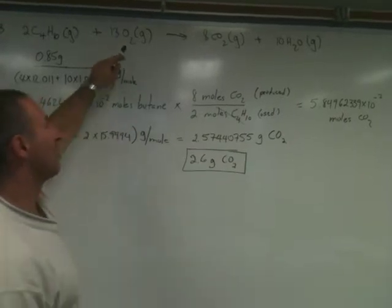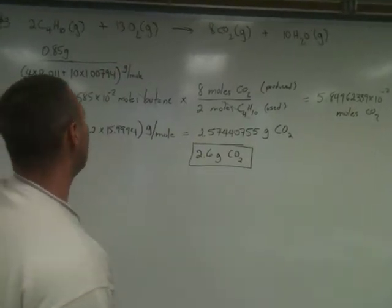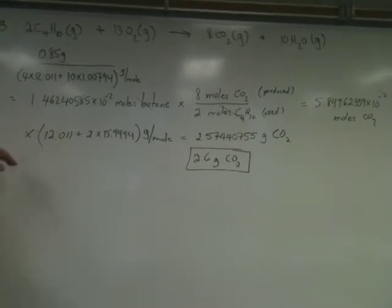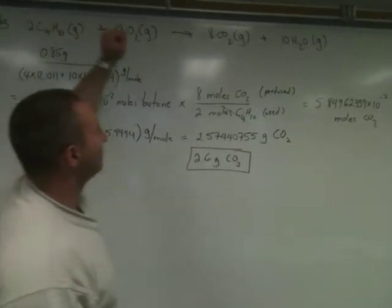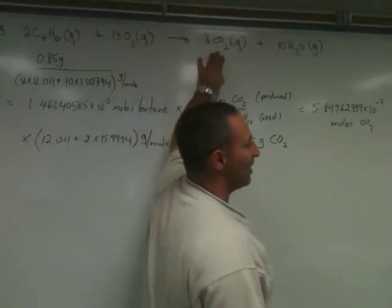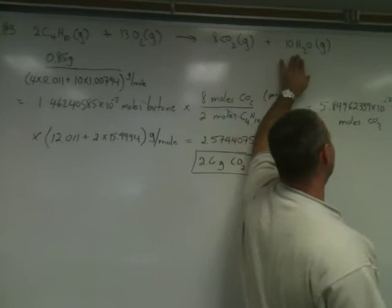26 oxygens is provided by 13 O2 molecules. So now that we have a balanced equation, we have the correct stoichiometry, meaning that two moles of butane require 13 moles of oxygen to produce eight moles of carbon dioxide and 10 moles of water.